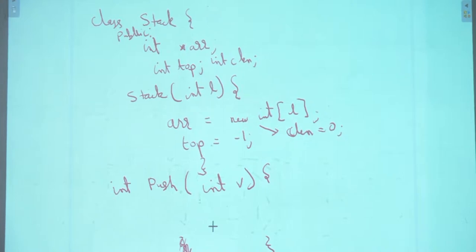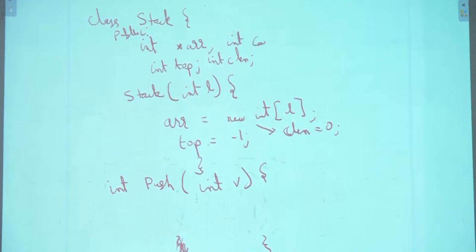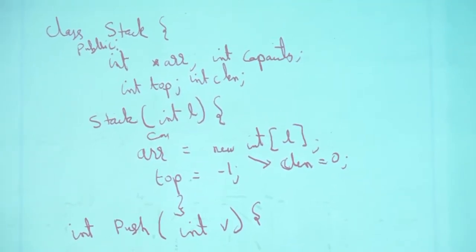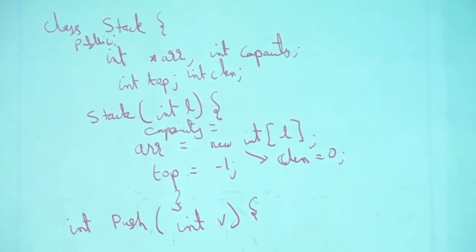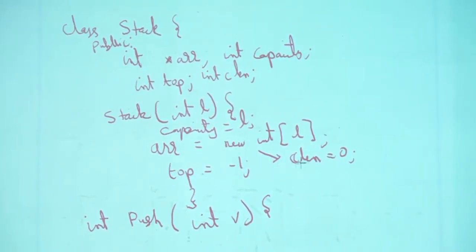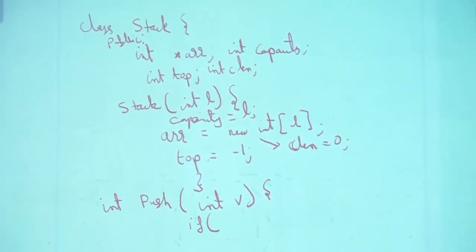I will create a variable int capacity, and set capacity = L in the constructor. So capacity = L, top = -1. Now the first line of push: if cLength == capacity — if cLength has already reached capacity, we can't push anything.